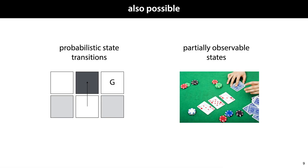We can extend the reinforcement learning framework in various ways. Sometimes state transitions are probabilistic — the environment moves us from one state to another based on a probability distribution that depends on the current state. For example, a robot's left wheel told to spin 5mm may travel anything from 0 to 5mm on a slippery floor. Another thing you may want to model is partially observable states — for instance, in a poker game you cannot see your opponent's cards or some face-down cards. We won't deal with these extensions here, but it's useful to know they exist.